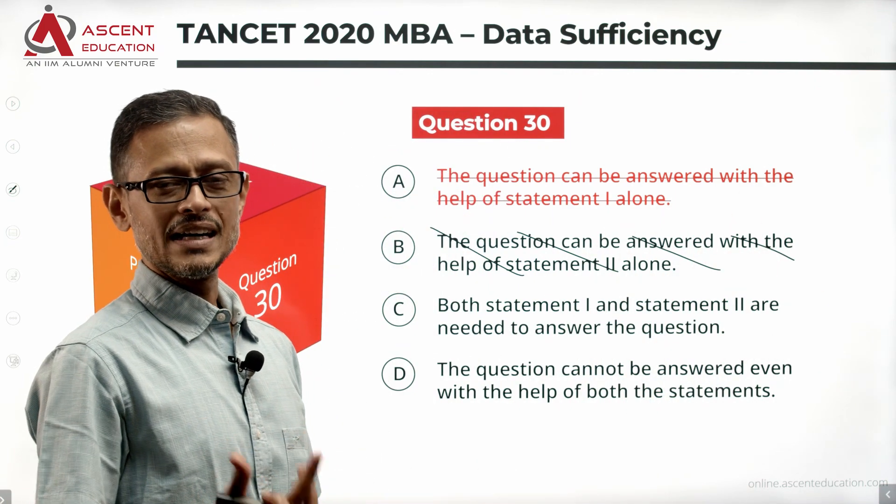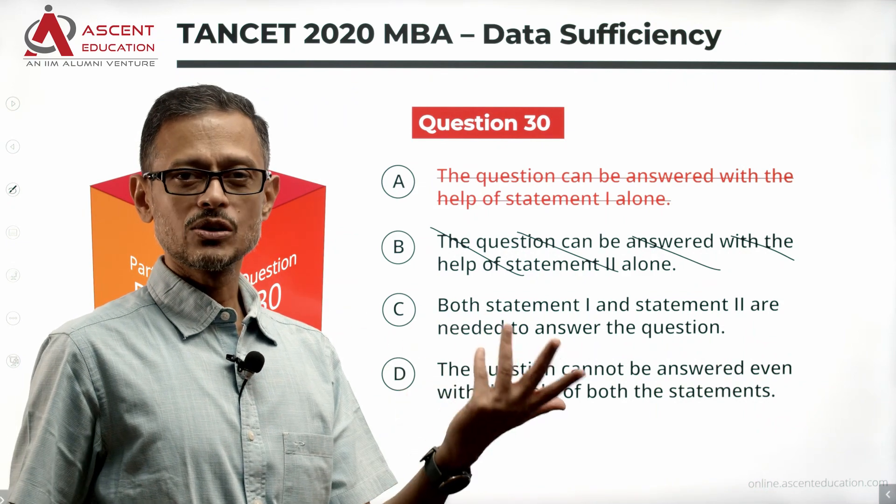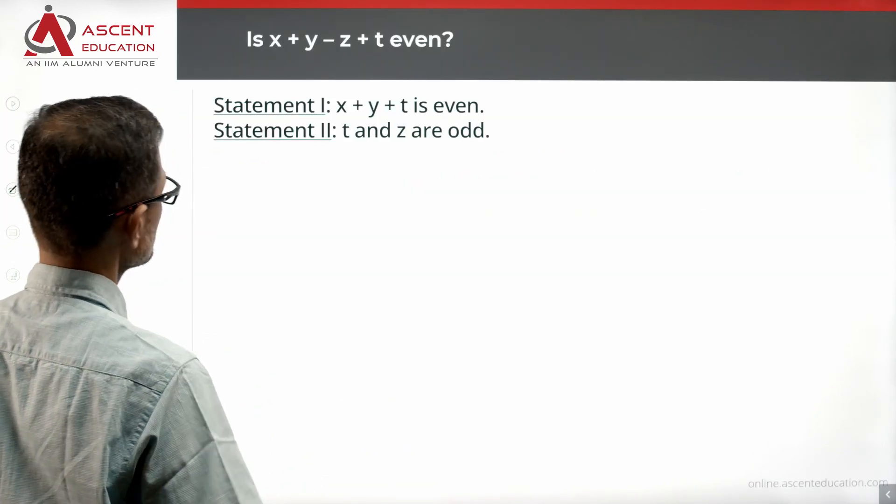Combine the two. If it works out, if you get a conclusive answer, C is the answer. If it doesn't work, we will go ahead and say it's D. Look at combining the two statements.